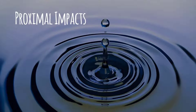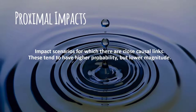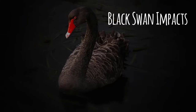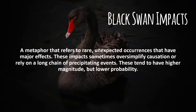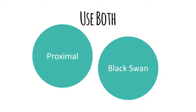It's also helpful to categorize impacts in two different ways. The first category is proximal impacts — these are impacts for which there are close causal links in the chain of logic. They tend to have higher probability but lower magnitude. For instance, an economic recession that results in poverty would be considered proximal. The other category is black swan impacts. This comes from a metaphor referring to rare, surprising events that have big impact. For instance, arguing that reducing H-1B visas leads to fewer skilled workers, which causes the US to fall behind in technology, science, and medicine, leading to a power vacuum and nuclear war. These impacts tend to have high magnitude but lower probability. Including both types can give you a strategic advantage — if you lose one argument, you can still win the other.